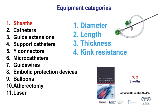Starting with the sheaths that allow the catheters to get into the vessels and then reach the coronary arteries. The four key characteristics of a sheath are the diameter, with 6 French commonly used for diagnostic and 6 to 8 French for PCI; the length of the sheath; the thickness, with thin-walled sheaths being used more commonly for radial access; and finally the kink resistance. This will be discussed in detail in video 30.2.